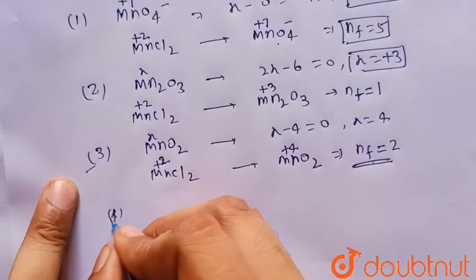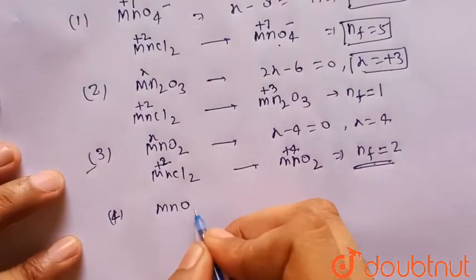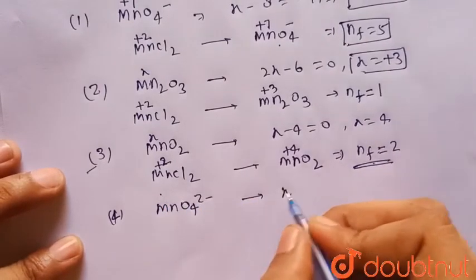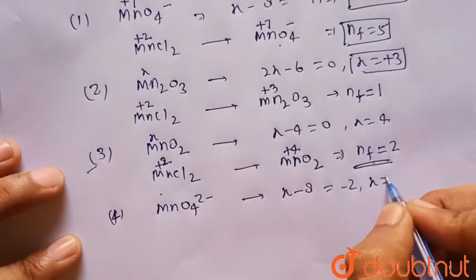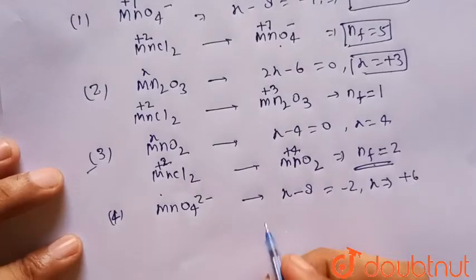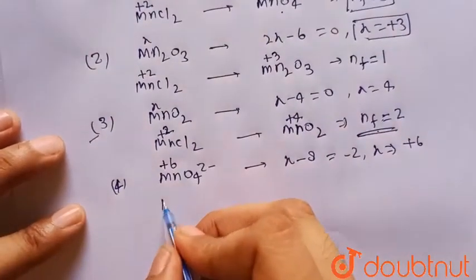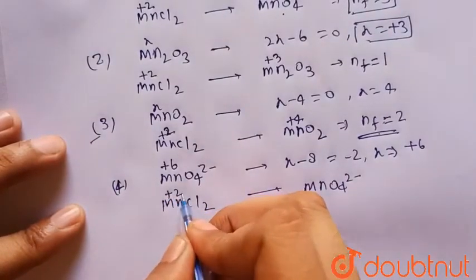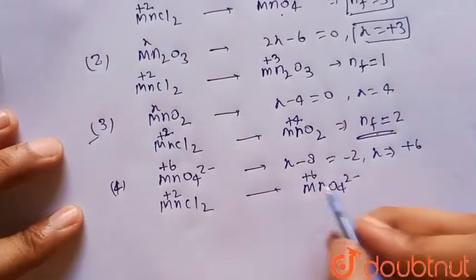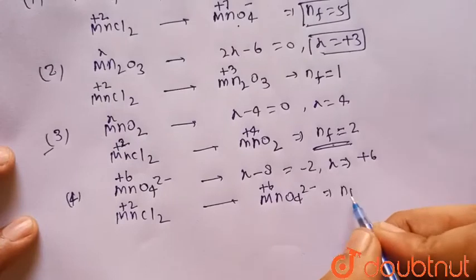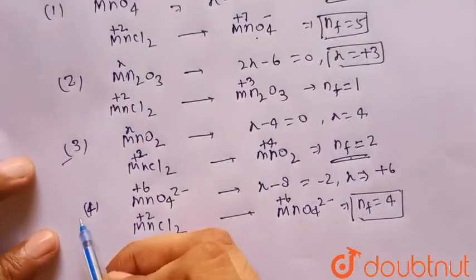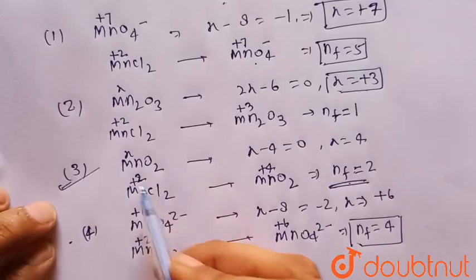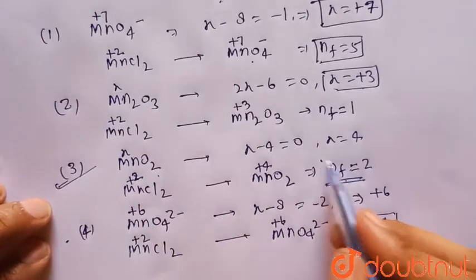We can also check the fourth option, MnO4²⁻. Its oxidation state: x − 8 = −2, so x = +6. When MnCl2 (Mn = +2) is converted to MnO4²⁻ (Mn = +6), the change in oxidation number is 6 − 2 = 4, so n-factor = 4. This is also not our desired compound, since only MnO2 gives n-factor = 2.